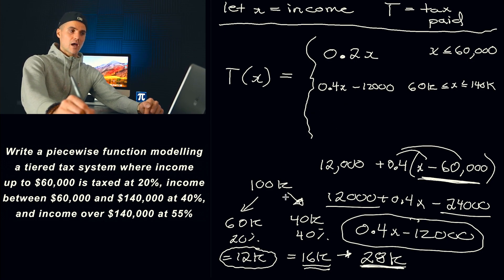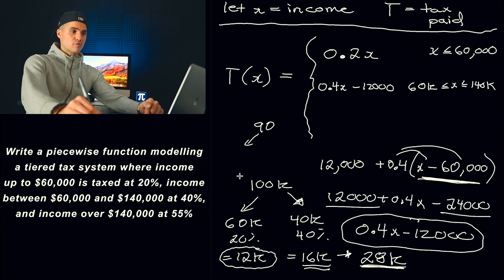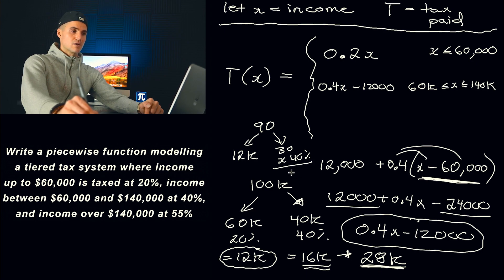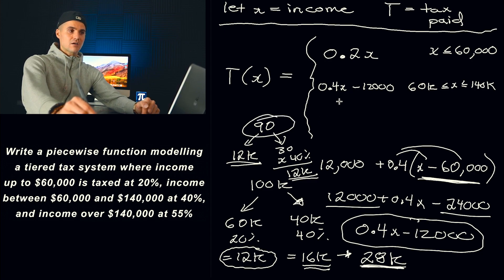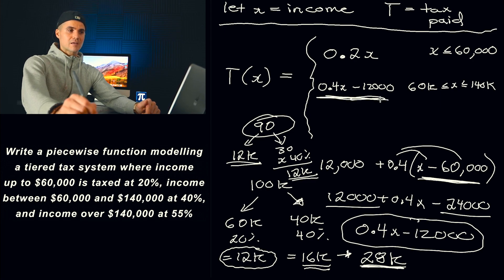You could test these equations out if you have time on a test. For example, if you made $90,000: the first $60,000 gives $12,000 in tax, and the excess of $30,000 taxed at 40% gives another $12,000, so total tax is $24,000. Testing our function: 0.4 times $90,000 is $36,000, minus $12,000 is $24,000. That confirms the second piece for income between $60,000 and $140,000 is correct.